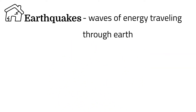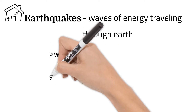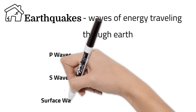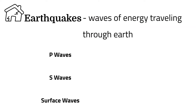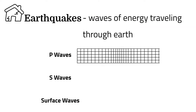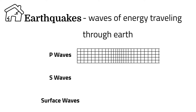There are actually three main types of seismic waves: P waves, S waves, and surface waves. P waves, or primary waves, travel the fastest. They cause a slight vibration that might not even be felt. P waves are also able to travel through solids and liquids.